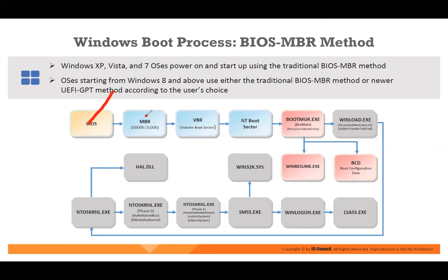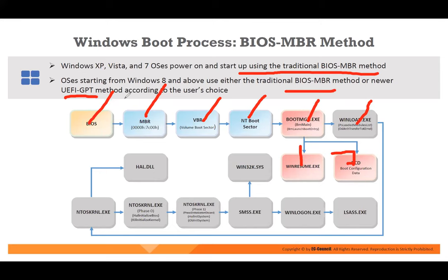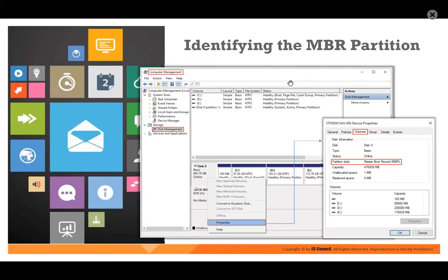The Windows boot sequence goes: BIOS → MBR → VBR → NT boot sector → boot manager → Windows loader → resume, then loads boot configuration, and then NT OS kernel, NT4, and all the file system we have seen start loading one by one. Windows XP and earlier use traditional BIOS MBR. Windows 8 and above uses either traditional BIOS MBR or the newer GPT method.